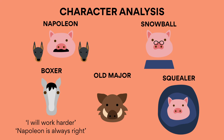Old Major. Based on the socialist revolutionary Karl Marx as well as the Russian revolutionary leader Vladimir Lenin, Old Major's dream of a socialist utopia acts as a major motive for the rebellion. Major's death creates a political vacuum in the farm, leaving Napoleon and Snowball in a power struggle for control of his followers.